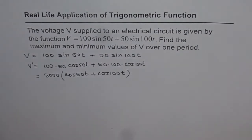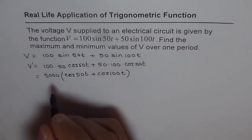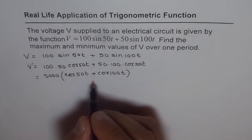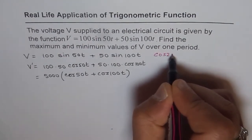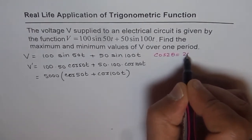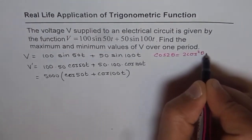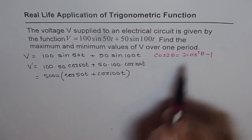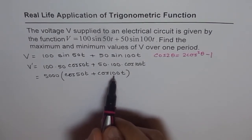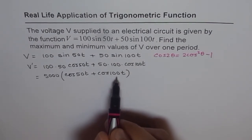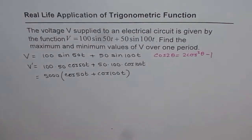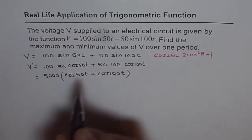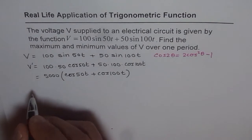Now we apply the formula for cos(2θ), which equals 2cos²θ minus 1. We notice that 100T is 2 times 50T, so we apply this formula here. This gives us a quadratic equation in cos(50T), which is the tricky but key part of solving this question.